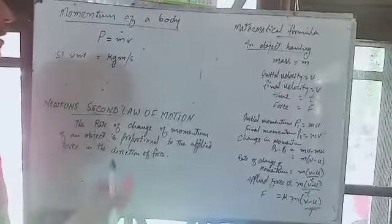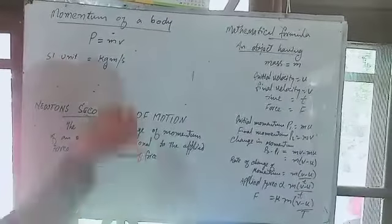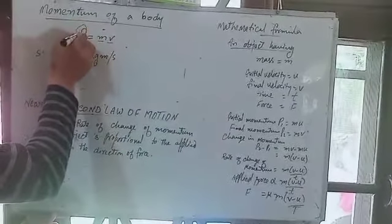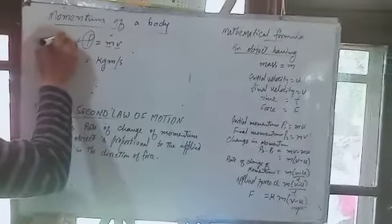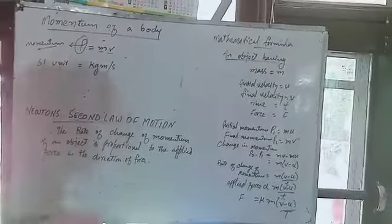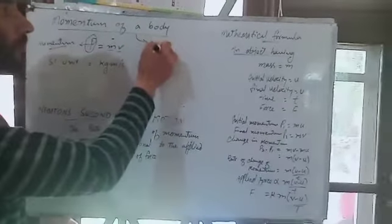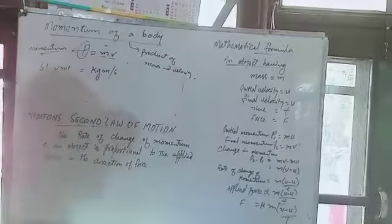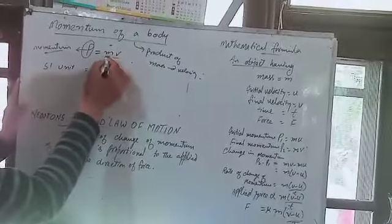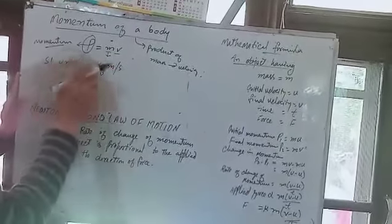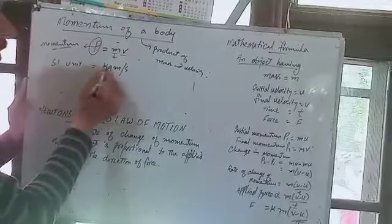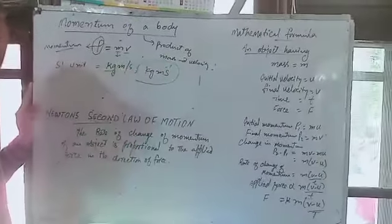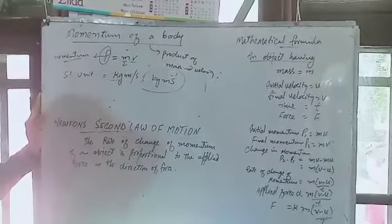Momentum of a body — two quantities, mass and velocity, are combined into one quantity known as momentum, P. Momentum is defined as the product of mass and velocity. The SI unit of mass is kilogram and velocity is meter per second, so the SI unit of momentum is kilogram meter per second, written as kg·m/s.